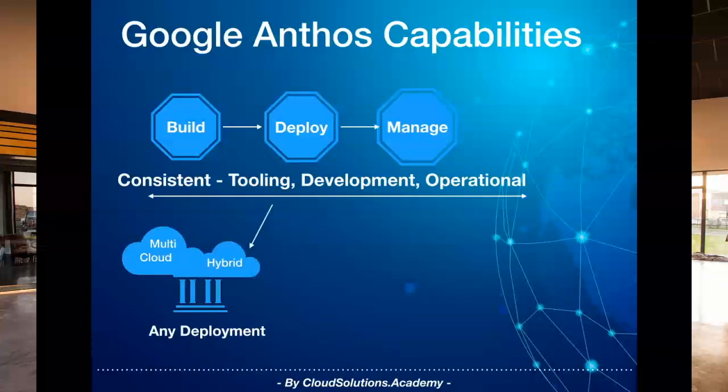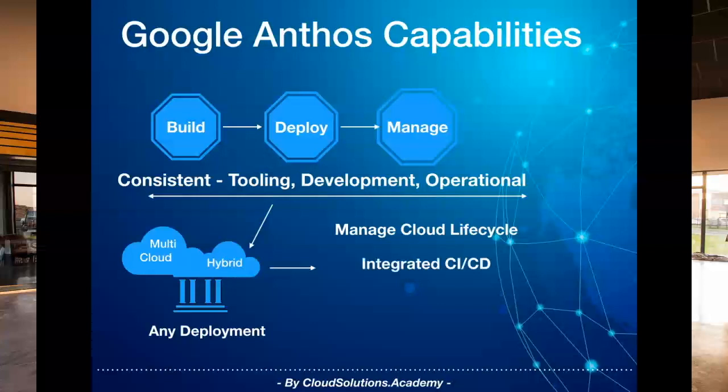Looking at the cloud application development and deployment lifecycle, it consists of various phases: creating cloud applications, packaging them into containers, deploying to a container registry, building everything as part of continuous deployment processes, running security and policy checks as part of continuous integration processes, and then actively deploying cloud applications to various environments.